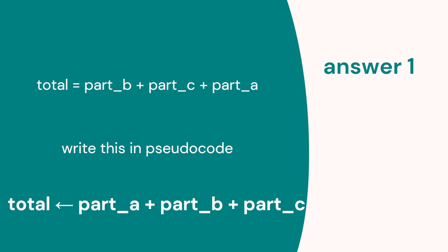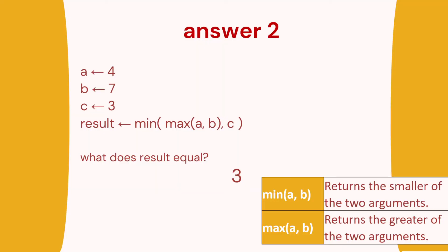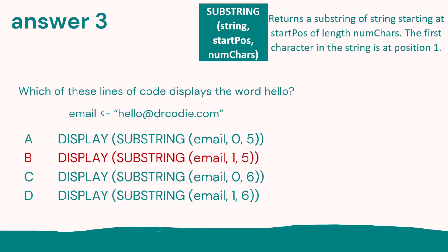Now the solutions. Task one: total equals part B plus part C plus part A — order doesn't matter. In pseudocode, use the plus operator between them with an arrow pointing to total. Task two: the maximum of A and B is seven; the minimum of seven and three is three — so apply maximum first, then minimum, giving us three. Task three: to display 'hello' from the email string, in pseudocode we start at position one and hello is five letters, so the answer is DISPLAY SUBSTRING(email, 1, 5) — that was answer B.